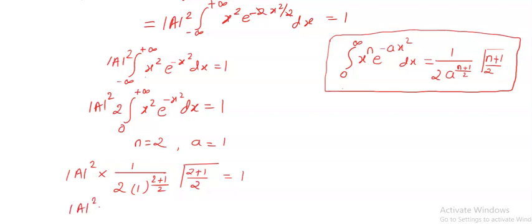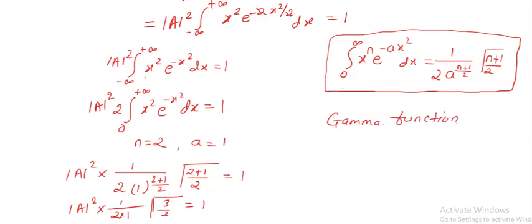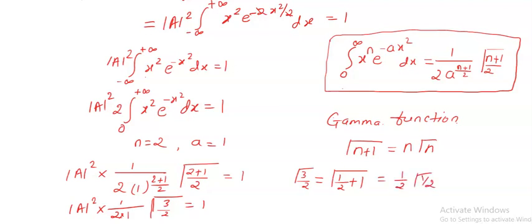So mod A square into 1 divided by 2, times gamma of 3 by 2, equals 1. From the gamma function, we know gamma of n plus 1 equals n times gamma of n. Here gamma of 3 by 2 equals gamma of 1 plus one half, where n equals one half, so this gives one half times gamma of one half. Since gamma of one half equals root pi, we get 1 by 2 times root pi. So replace gamma of 3 by 2 with 1 by 2 times root pi.